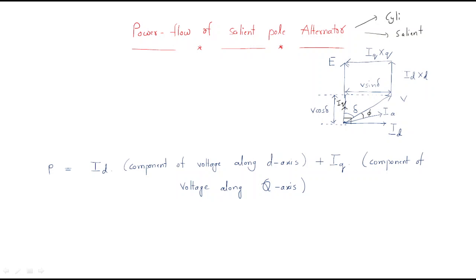We can write V cos δ and V sin δ. Applying trigonometry — adjacent side by hypotenuse — hypotenuse is V, so the adjacent side gives V cos δ, and here we have V sin δ. To find the value of E, which is from this point to this point, here we have id, and directly opposite we have direct axis reactance xd, so we draw this drop as id·xd.